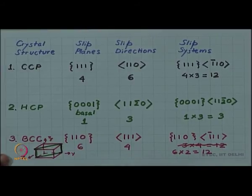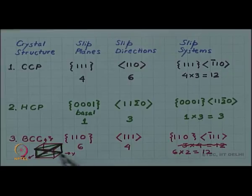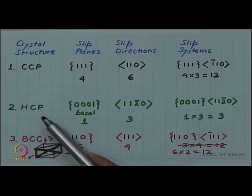So if you take this as your x axis, y and z then a {110} plane will be this green plane. And <111> kind of direction, the body diagonals are the two body diagonals which are lying in this plane like this. So this green plane and these two directions give you the two out of these 12 slip system. I will leave this as an exercise for you to find out other 10 slip systems and draw them for BCC as well as do that for HCP and CCP.